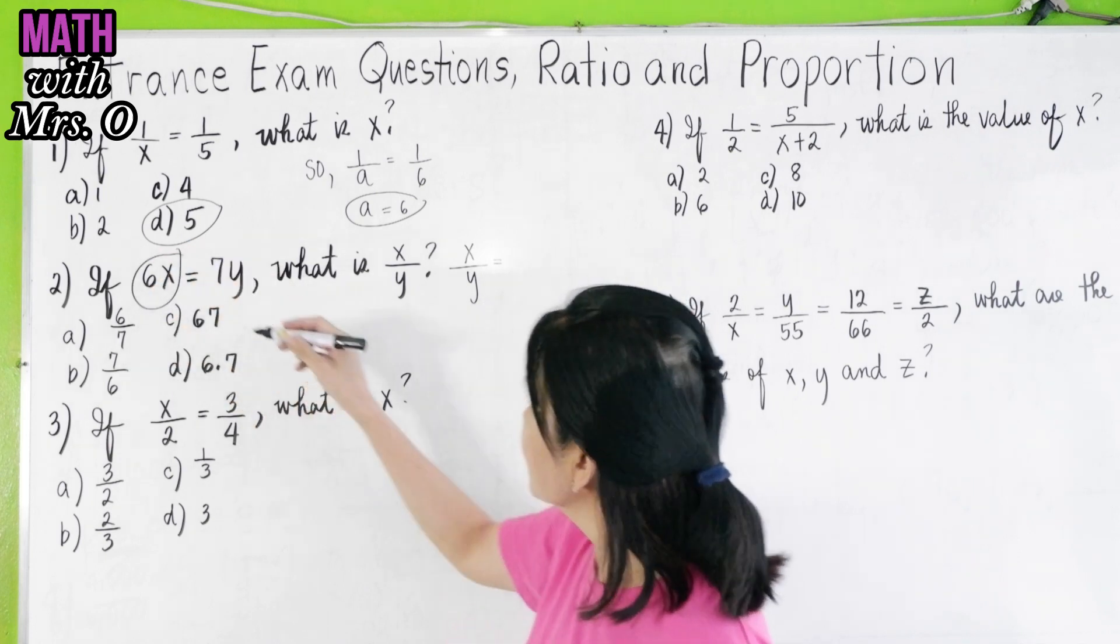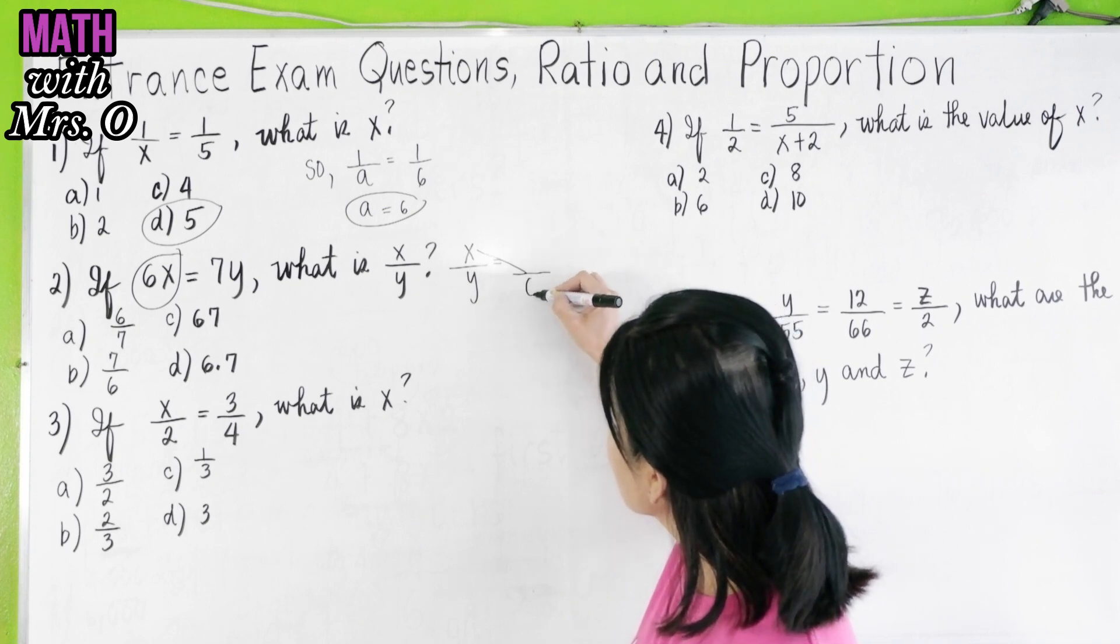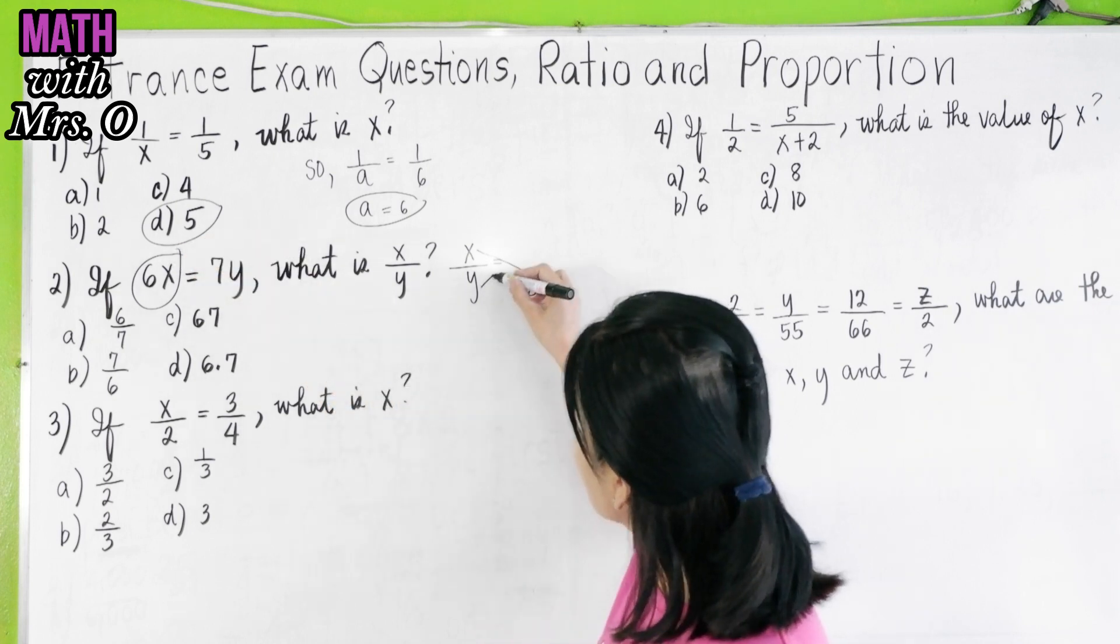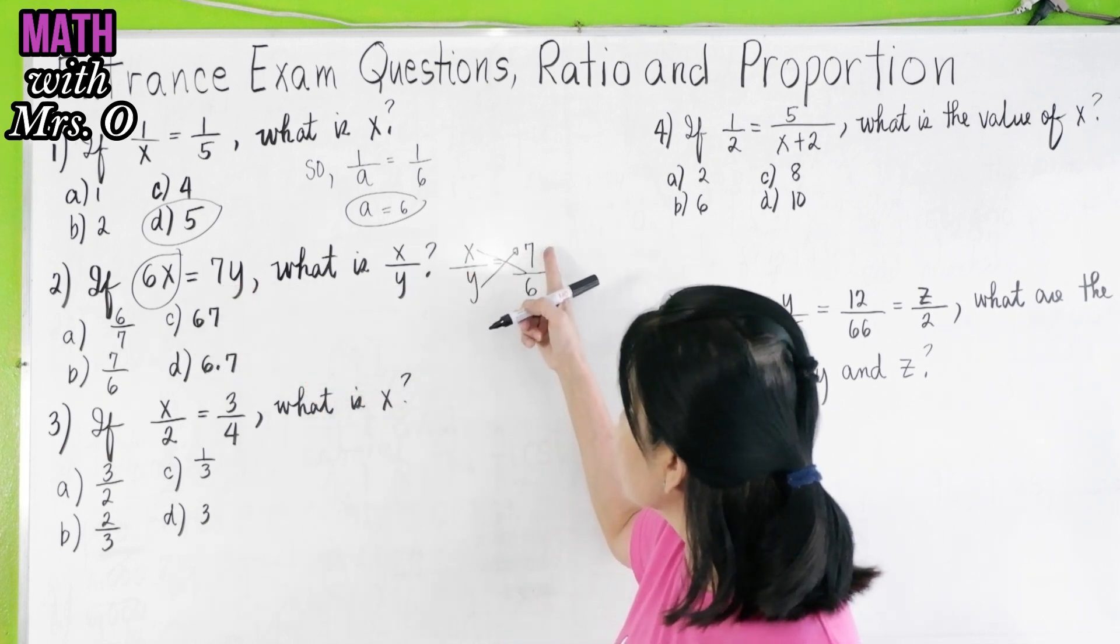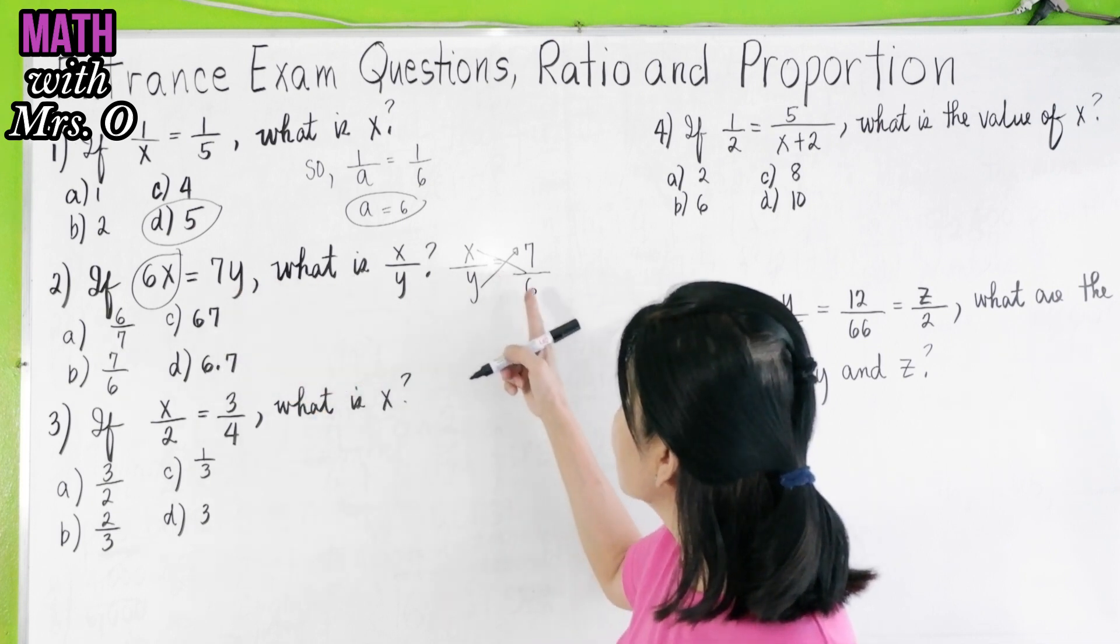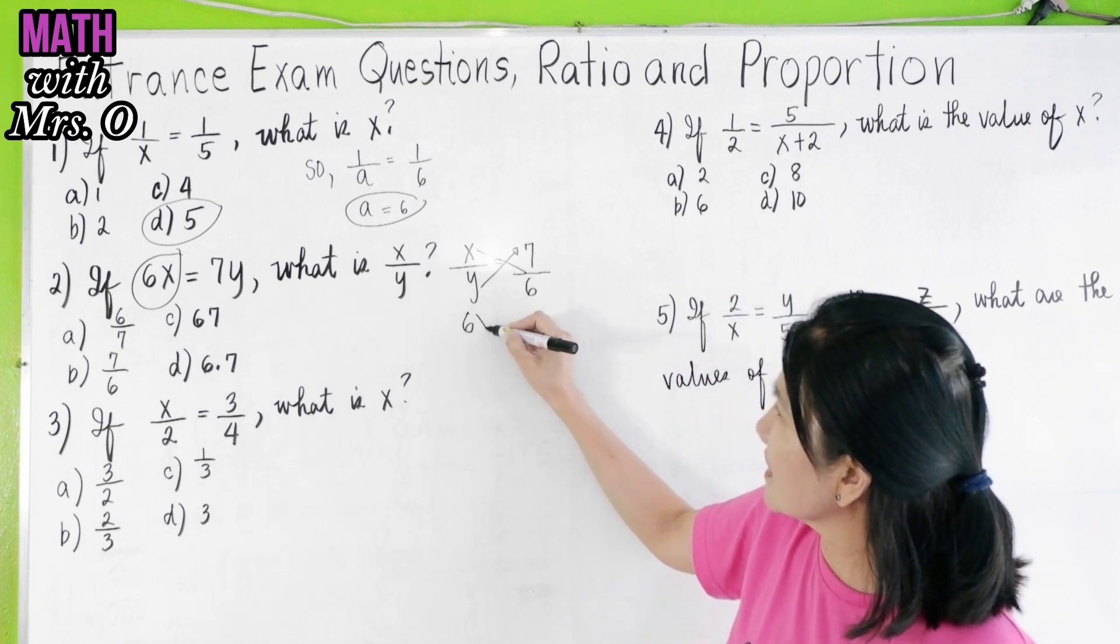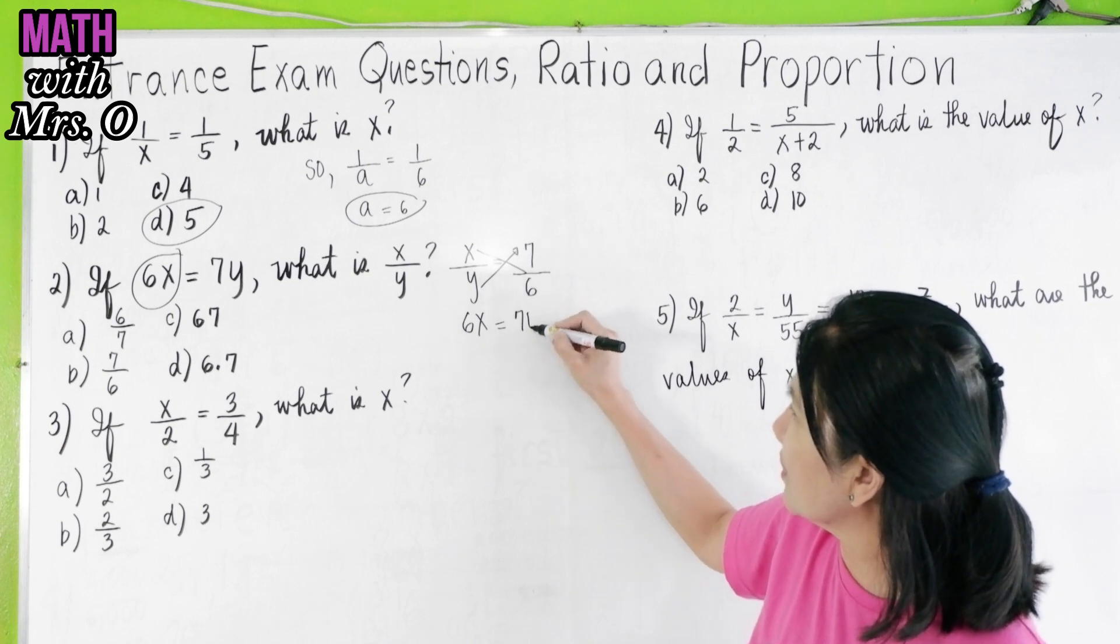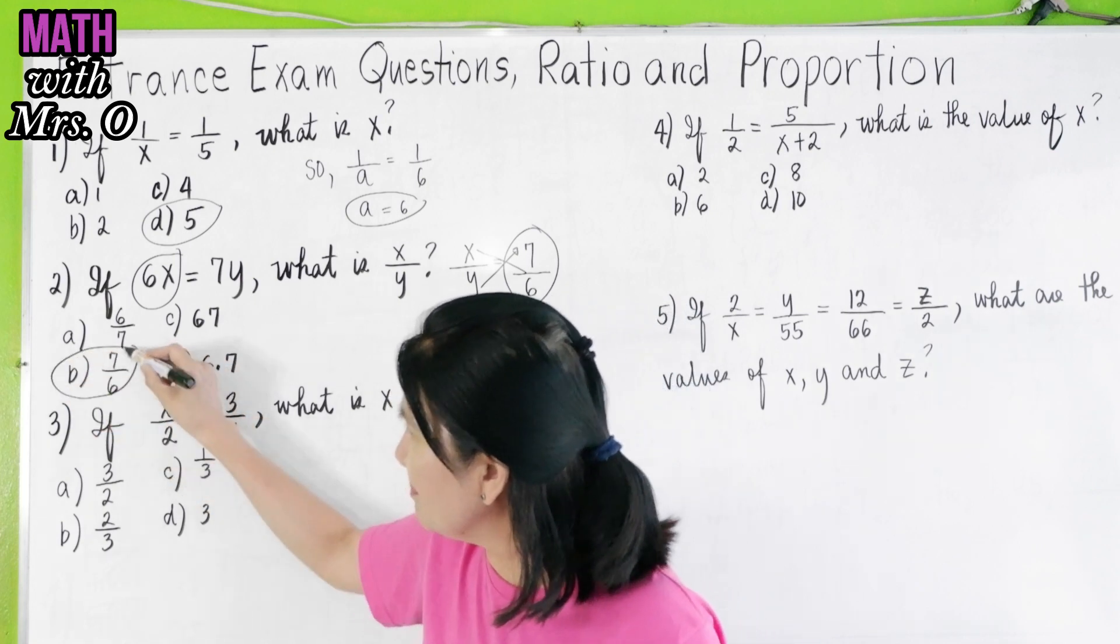What do you multiply to x to make it 6x? 6. 6 times x will give you 6x. What do you multiply to y to make it 7y? 7. 7 times y is 7y equals 6 times x is 6x. 6 times x is 6x equals 7 times y is 7y. So the answer is 7 over 6, letter b.